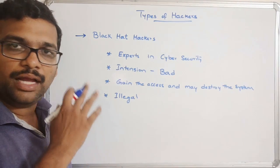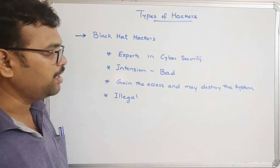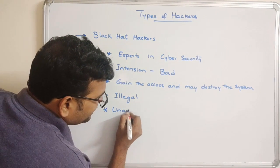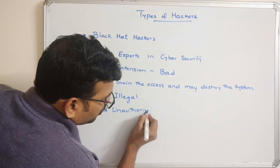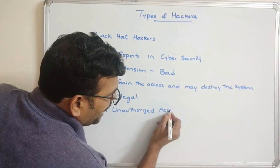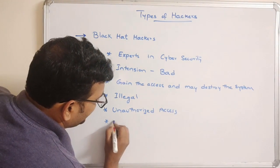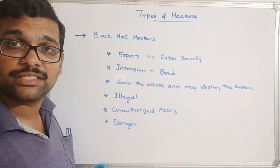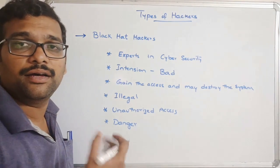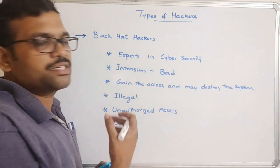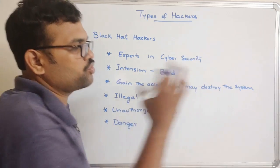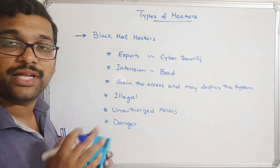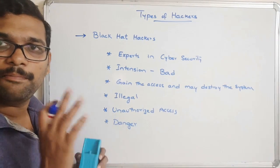These come under illegal work — unauthorized access. These hackers are dangerous because they will gain access to our system and steal our personal data or financial data, or they may destroy the complete system. So these are called black hat hackers. That is the major difference between white and black hat hackers.